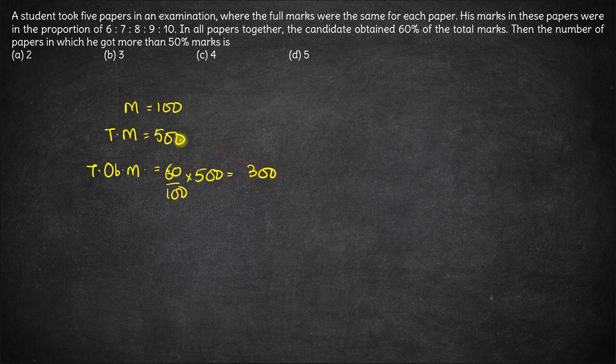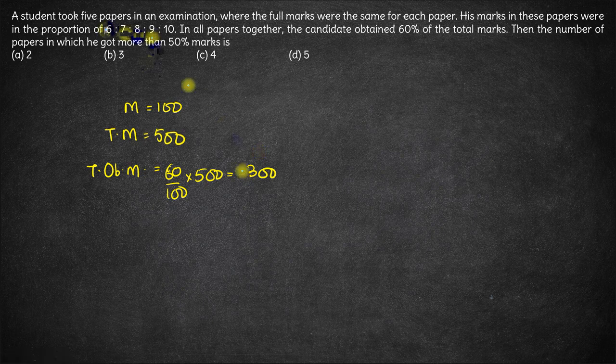So out of 500 he got 300 marks in all. And this 300 marks is in the ratio of 6, 7, 8, 9 and 10 in each of these 5 papers.